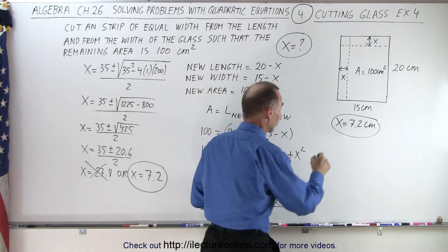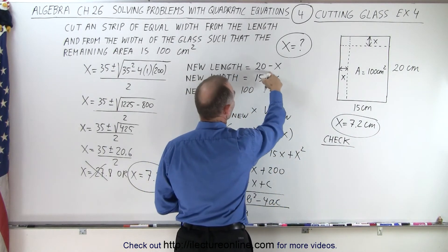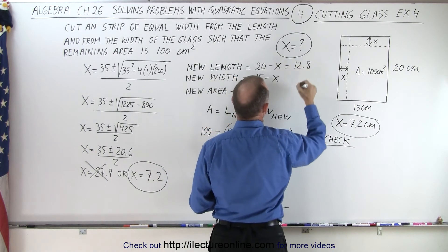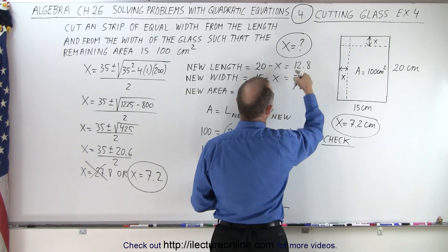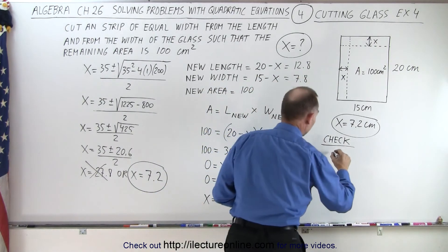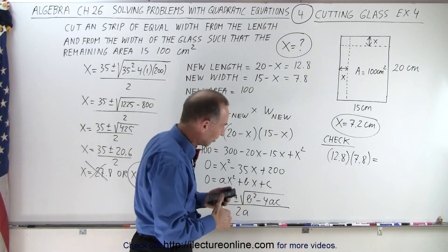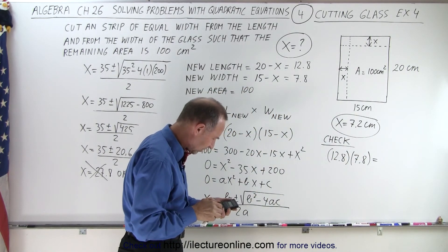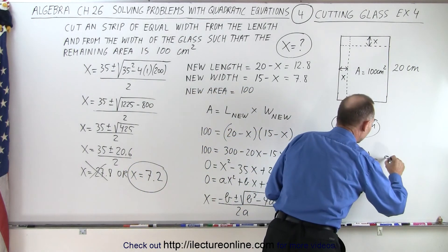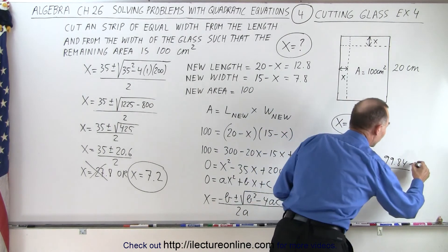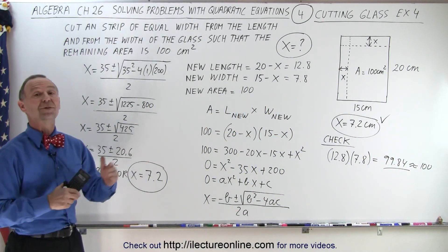Let's check it by plugging in this value. The new length is 20 minus 7.2, which equals 12.8, and the new width is 15 minus 7.2, which equals 7.8. Multiplying those together, 12.8 times 7.8 equals 99.84, which is approximately 100 due to slight rounding error. So this is the correct answer to one decimal place, and that is how it's done.